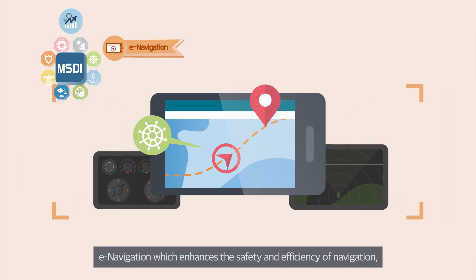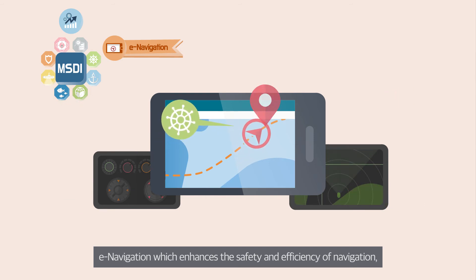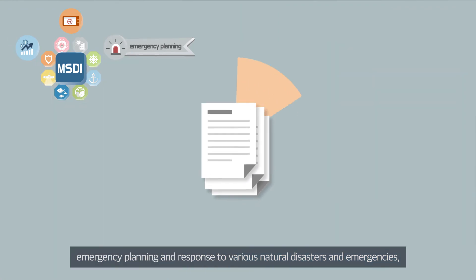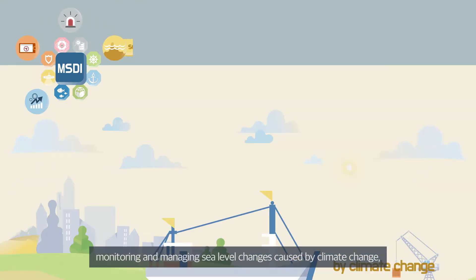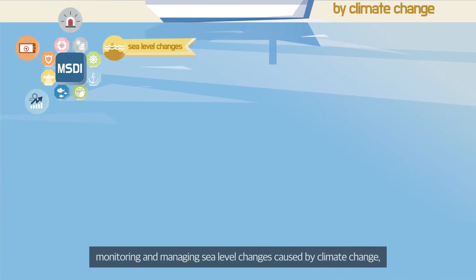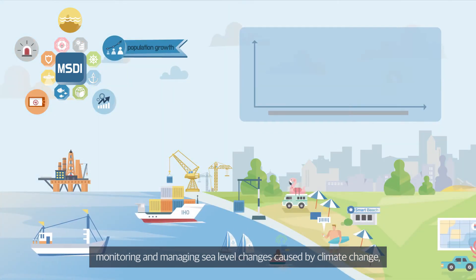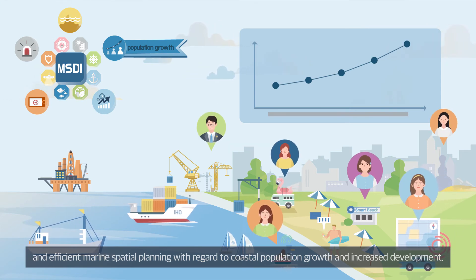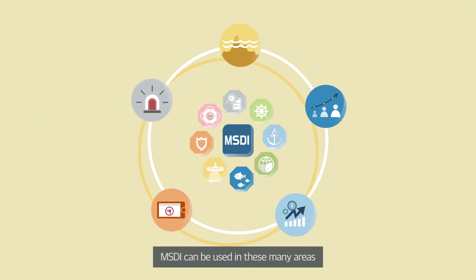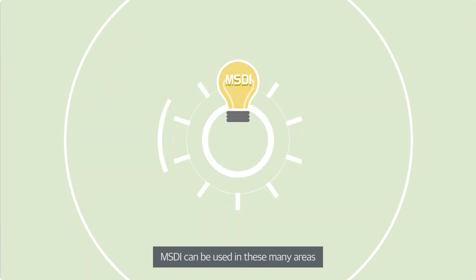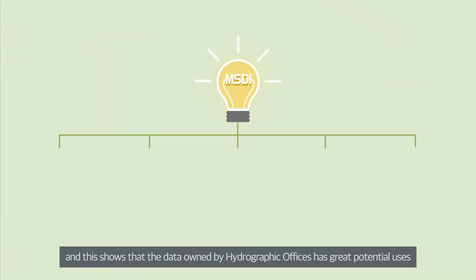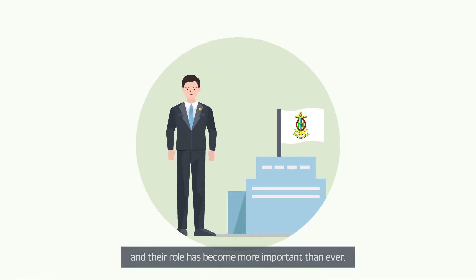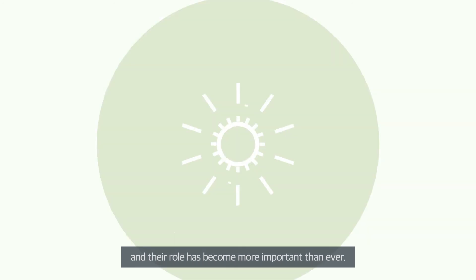E-navigation enhances the safety and efficiency of navigation. MSDI also supports emergency planning and response to various natural disasters, monitoring and managing sea level changes caused by climate change, and efficient marine spatial planning with regard to coastal population growth and increased development. This shows that the data owned by hydrographic offices has great potential uses, and their role has become more important than ever.